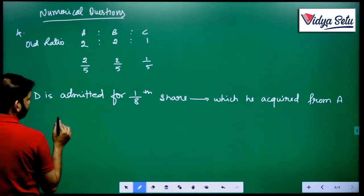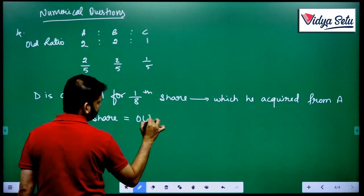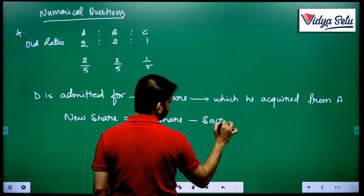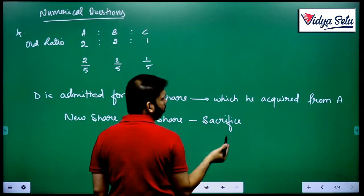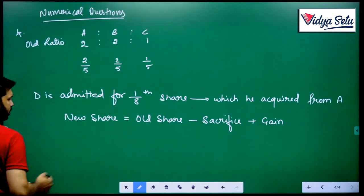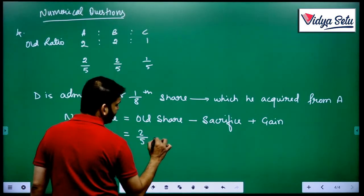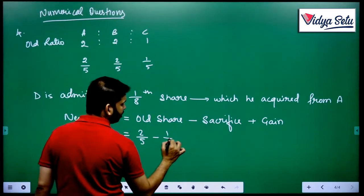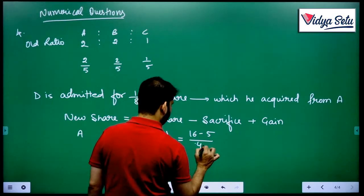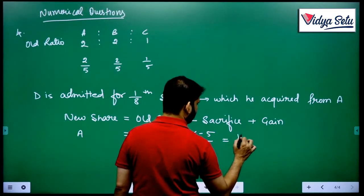New share equals old share minus sacrifice, or plus gain — either it is minus sacrifice or plus gain. In the case of A, his old share was 2/5 minus he is sacrificing the entire 1/8. So, 16 minus 5 upon 40, which comes to 11/40.